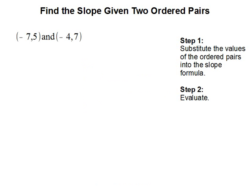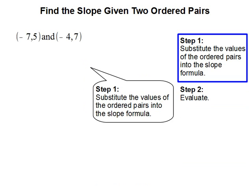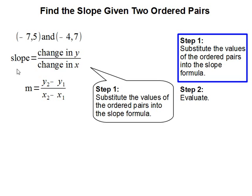Find the slope given two ordered pairs. Step 1: Substitute the values of the ordered pairs into the slope formula. The slope formula is given by the change in y over the change in x. Slope is also known as m, and the change in y is the difference between the y values and the change in x is the difference between the x values.